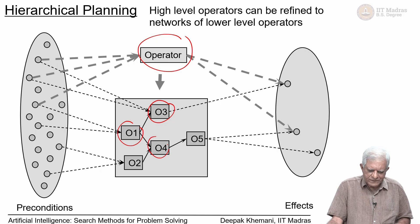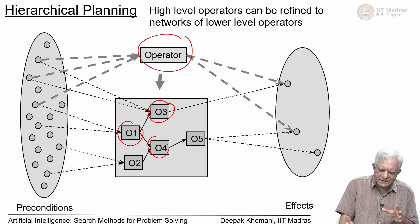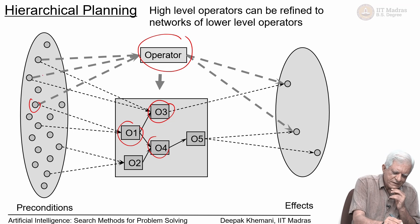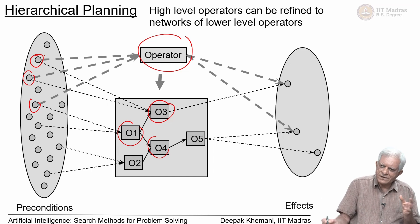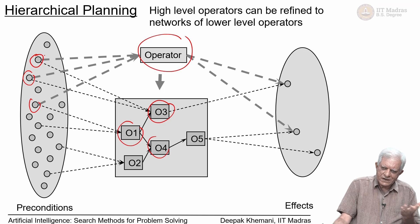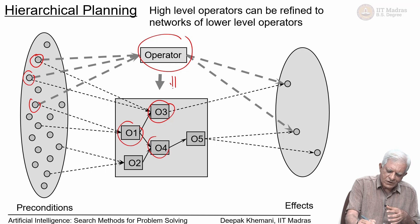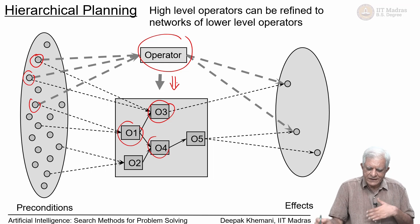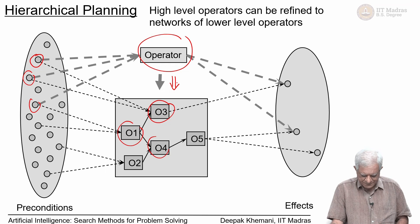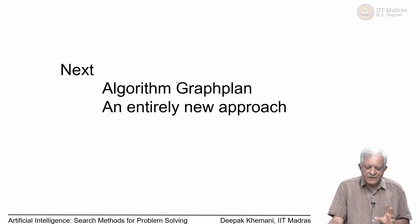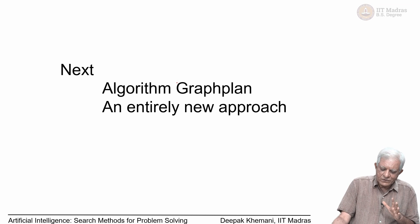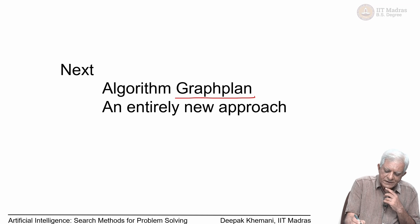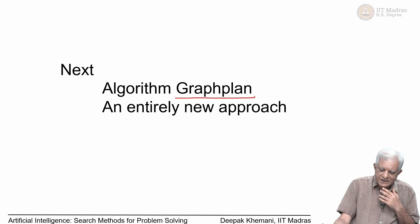Unfortunately, we do not have time to look at hierarchical planning in detail. The preconditions for the high-level operator could be things like having leave, time, and money. You refine that high-level plan into a more detailed plan — that is the approach taken in hierarchical planning. What we will do last in planning is look at an algorithm called Graph Plan, which was devised in the mid-1990s and gives us an entirely new approach to planning.